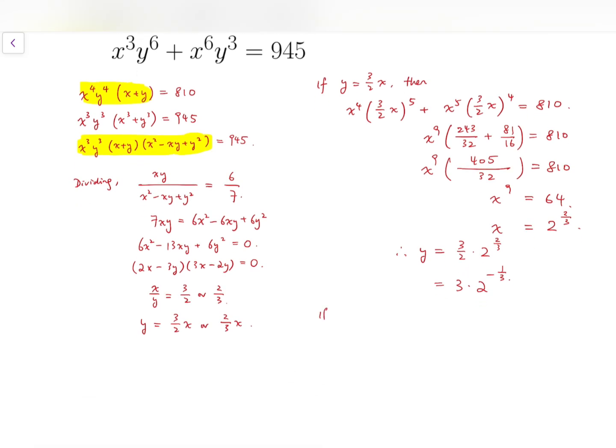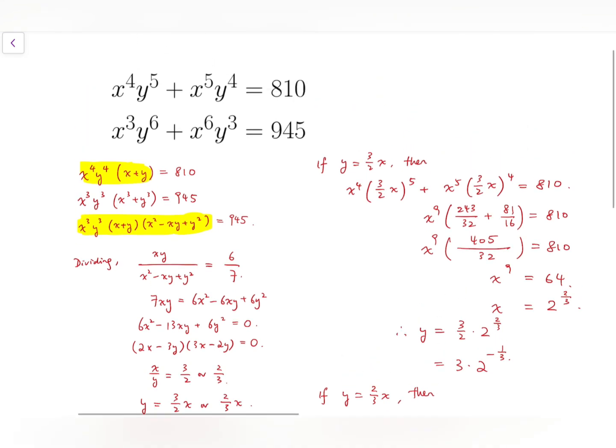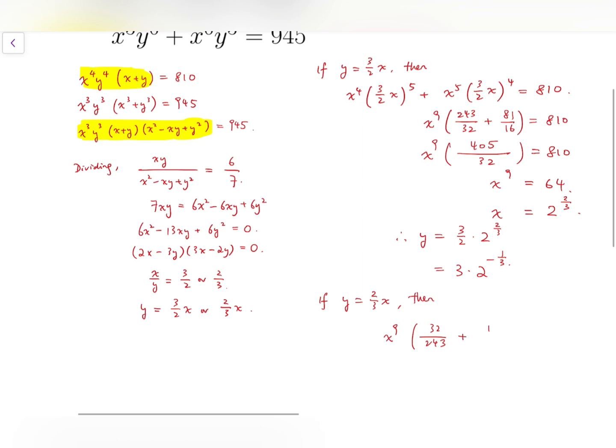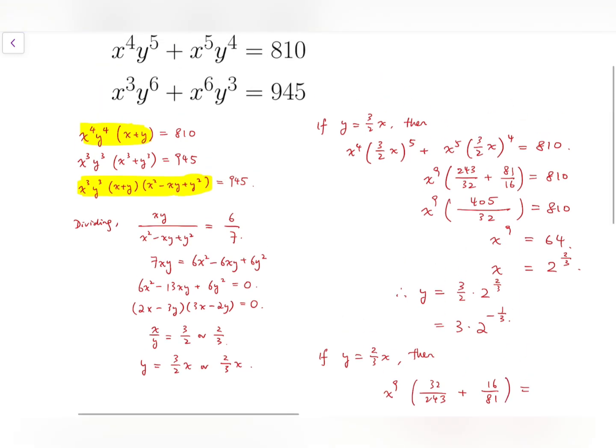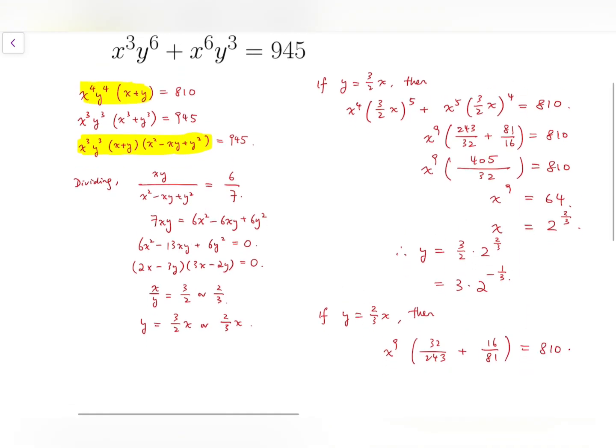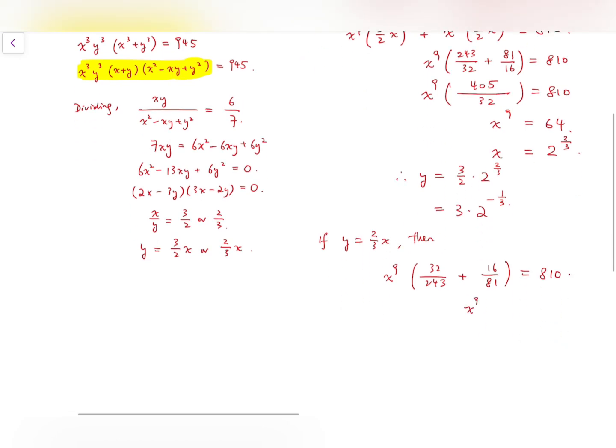Now for the second case, if y equals 2 over 3 times x, then using a similar argument, I can say that x to the power 9 times 32 over 243, which is 2 thirds all to the power 5, and then added by 16 over 81, 2 thirds all to the power 4, equals 810.